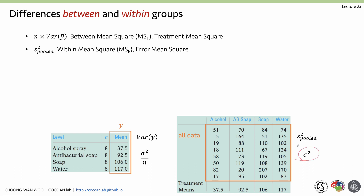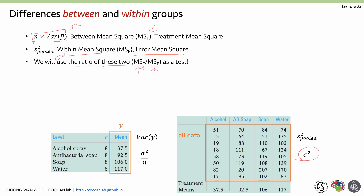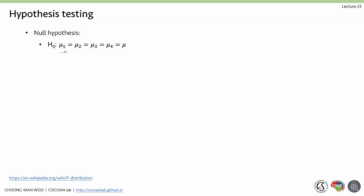The variance of ȳ times n is the between-group Mean Square Treatment (MST) — the population-level variance estimated based on differences across groups. The pooled variance from all data gives us the within-group Mean Square Error (MSE). We use the ratio of these two — MST divided by MSE — as our test statistic.